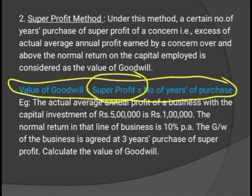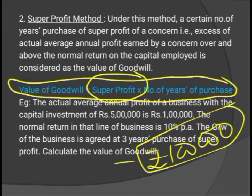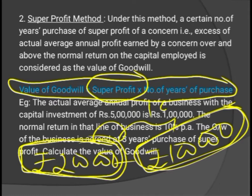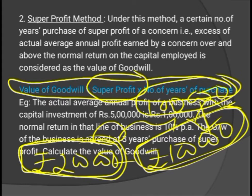For example, if the normal return in a line of business by employing certain capital is Rs 1 lakh, but your business earns Rs 2 lakh, then you are earning an excess of Rs 1 lakh over the normal return. This excess profit is called super profit. If your business can earn profit over and above the normal return, it has super profit earning capacity, and that is the base for goodwill calculation under the super profit method.